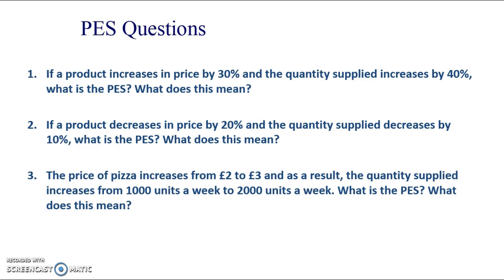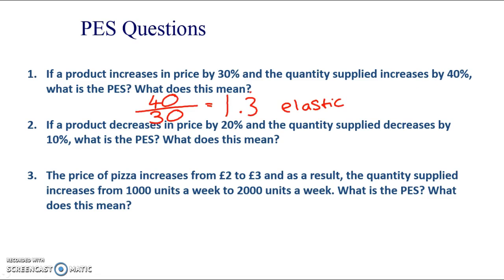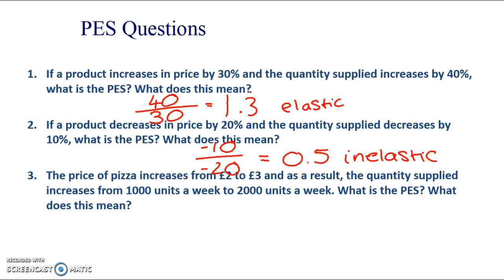We can already tell that's elastic because quantity supplied is increasing by a larger percentage than the price. Putting it into the equation gives 1.33 recurring — elastic. Second question: if a product decreases in price by 20% and the quantity supplied decreases by 10%, what is PES? The percentage change in price is larger than the percentage change in quantity supplied, so we can guess it's inelastic. Putting it into the equation: -10 divided by -20 = 0.5, meaning it's inelastic — insensitive to a change in price.